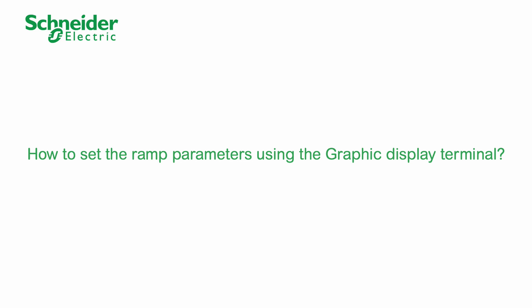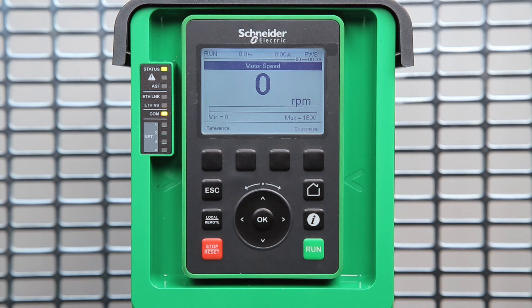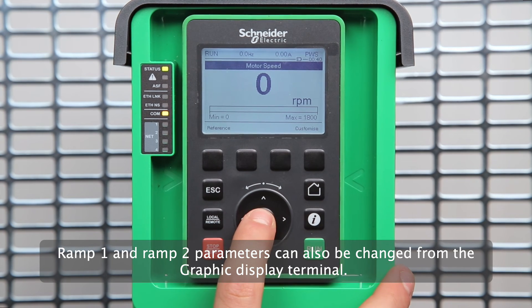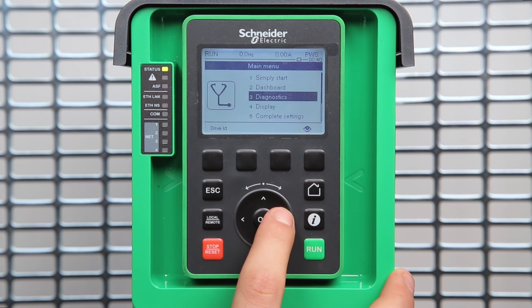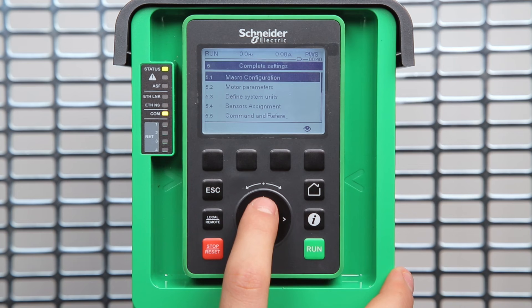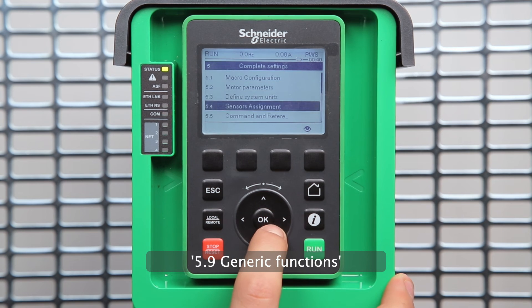How to set the ramp parameters using the graphic display terminal. Ramp 1 and ramp 2 parameters can also be changed from the graphic display terminal. Go to Menu 5, Complete Settings. 5-9 Generic Functions.